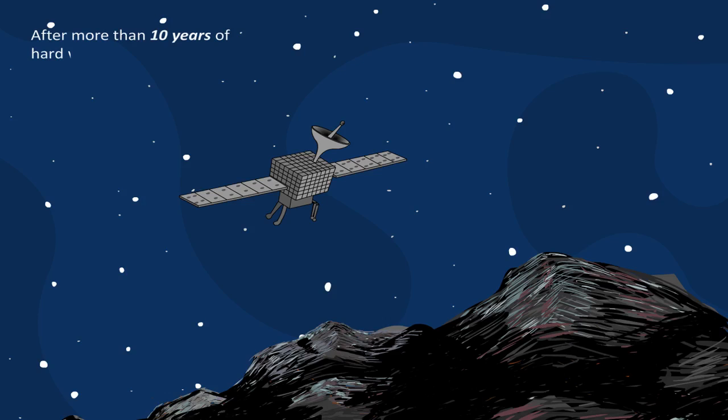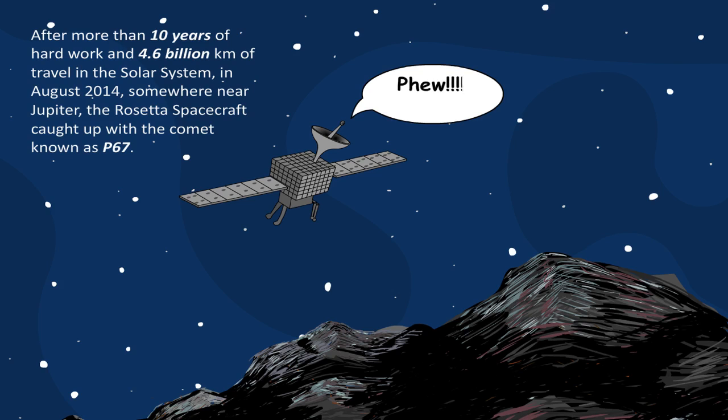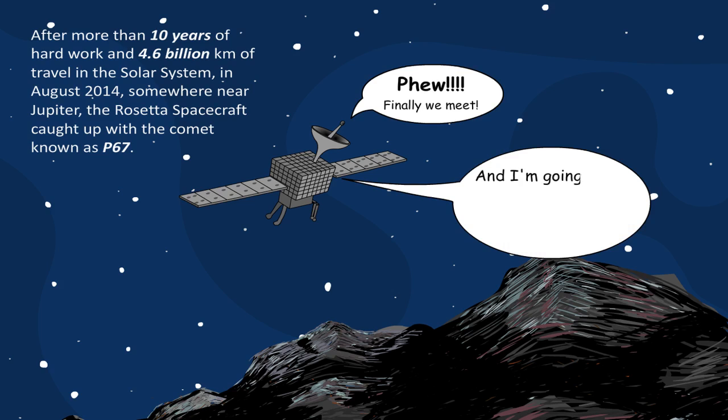After more than 10 years of hard work and 4.6 billion kilometers of travel in the solar system, in August 2014, somewhere near Jupiter, the Rosetta spacecraft caught up with a comet known as P67. 'Phew, finally we meet. And I am going to be piggyback riding on you till December 2015.'